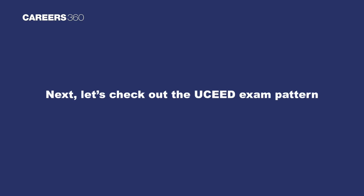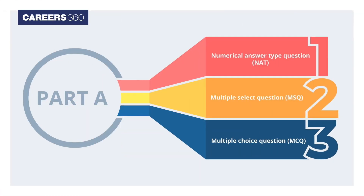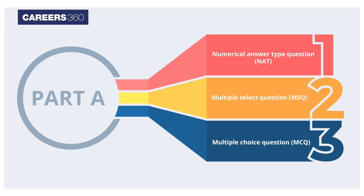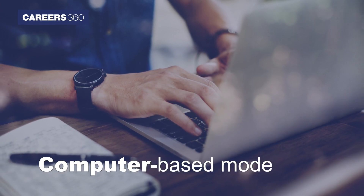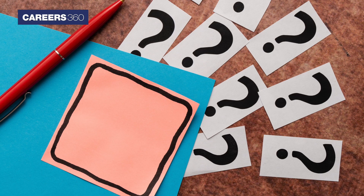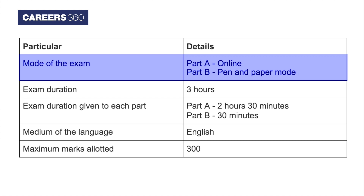The UCED exam consists of two parts: Part A and Part B. Part A contains three sections — numerical answer type questions, multiple select questions, and multiple choice questions. Part A will be held in computer-based mode and will contain questions from topics like observation and design sensitivity, visualization and spatial ability, analytical and logical reasoning, environmental and social awareness, and design thinking and problem-solving, language and creativity. Part B will be held in pen and paper mode comprising one drawing question. Both Part A and Part B will be conducted on the same day.